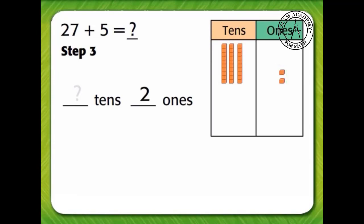How many tens are in the tens section? 3. 3 tens and 2 ones is 32. So 27 plus 5 equals 32.